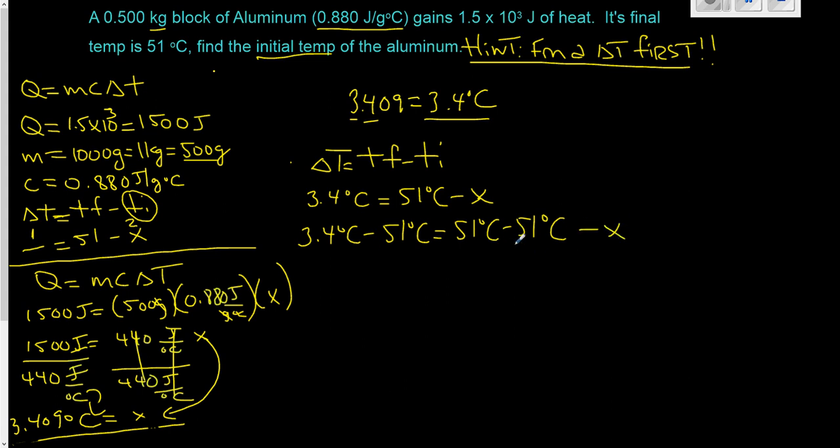Subtract X. So 51, subtract 51, that's going to give us 0 over here. So there's no need. 0 and minus X. Don't forget the minus. Very important. Subtract X. And 3.4, subtract 51 degrees Celsius is going to give us, it's going to be a negative, negative 47.6 degrees Celsius.